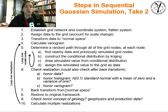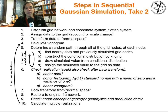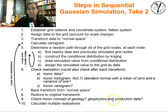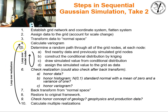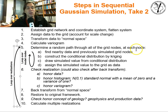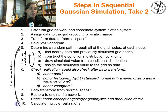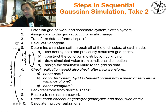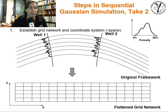You'll reproduce the original distribution. You restore to the original framework — if you flattened and had some undulation, stratigraphic complexity, or faulting, you restore it back to that state. Then you could check whether you honored the geologic concepts, geophysical information, production data, and so forth. And to calculate multiple realizations, just go back up to the top — just determining a new random path, loop through, draw new values with Monte Carlo simulation, and you get a totally different realization.